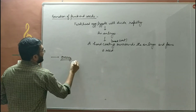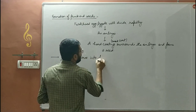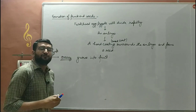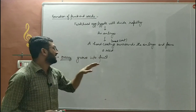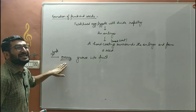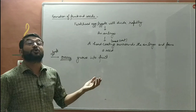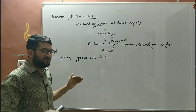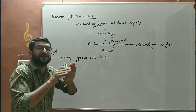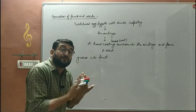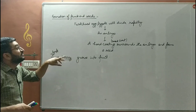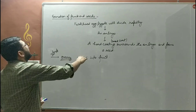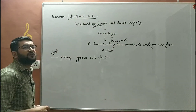The female reproductive part — that is, the ovary — will grow into a fruit. A very important one-mark question: which part of the flower grows into a fruit? The answer is the female reproductive part, that is the ovary. And which part grows into a seed? The fertilized egg or zygote present in the ovule will develop into a seed after multiple divisions, with a hard covering over it. That is how a fruit and seed is formed in plants.